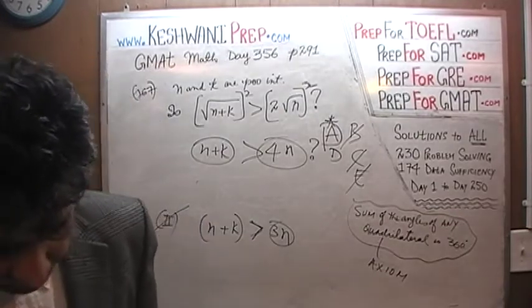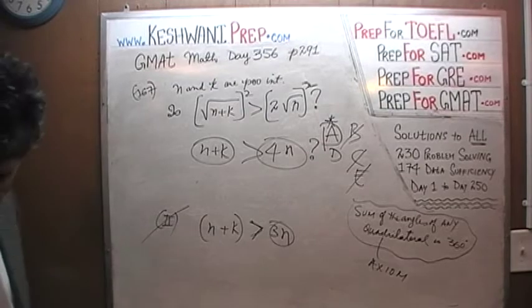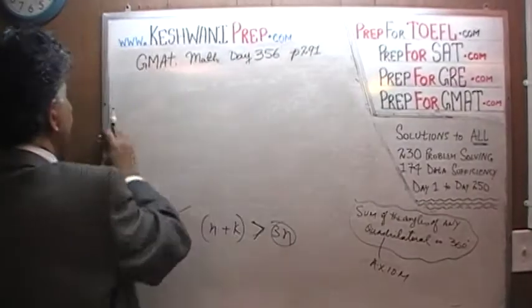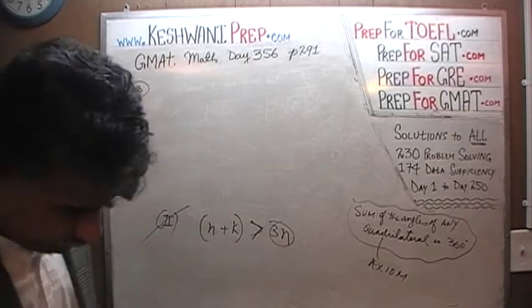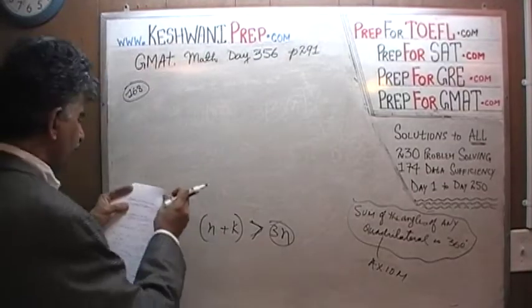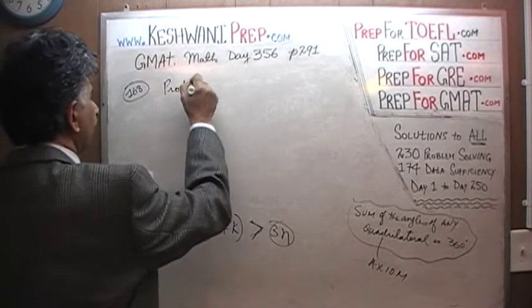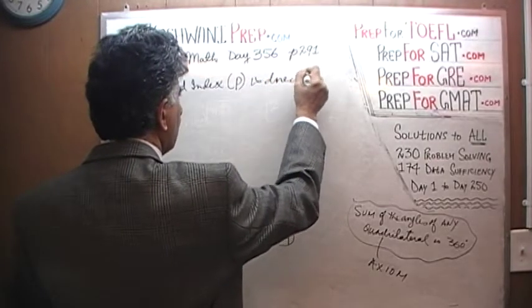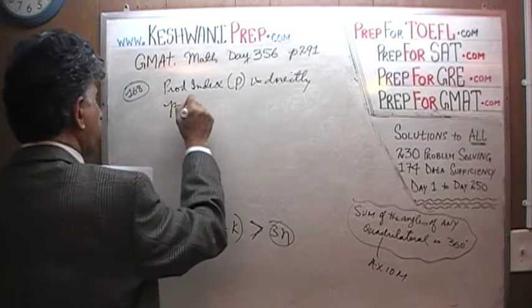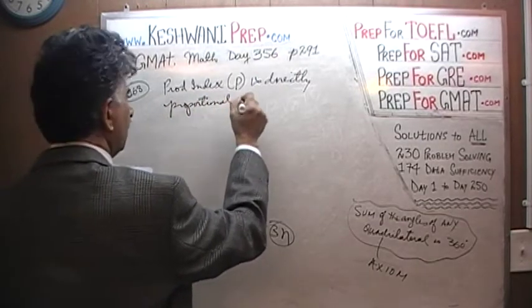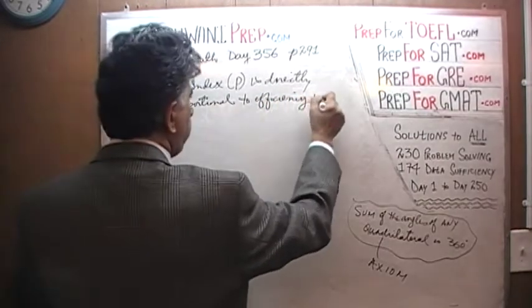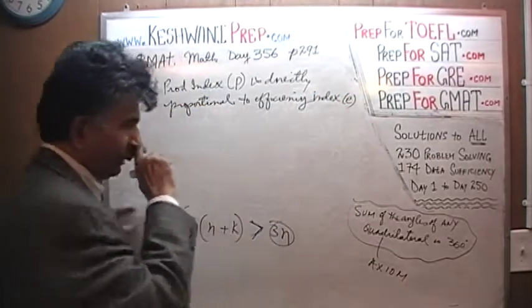Let's go on to number 168. We are told that the production index — let's call it P — is directly proportional to the efficiency index — let's call it E.